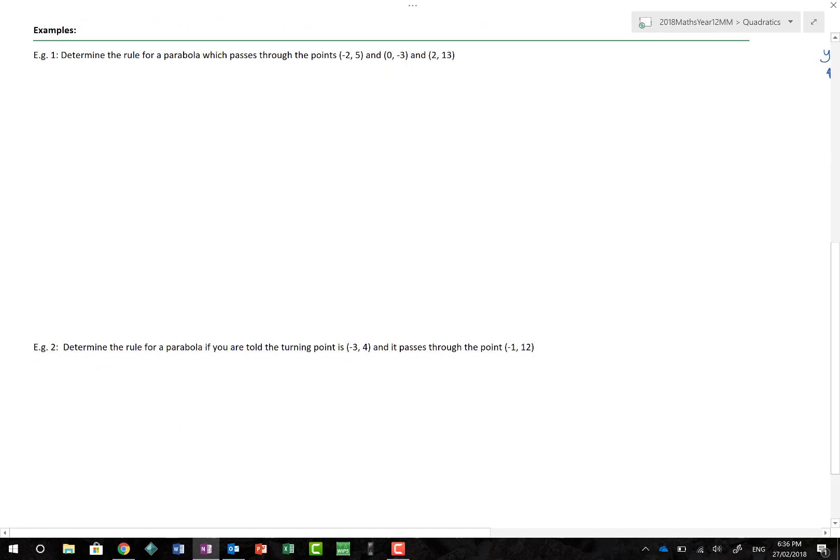It's going to be a really short video because we're straight on to those examples. So determine the rule for a parabola which passes through the points (-2, 5), (0, -3), and (2, 13). So we've been given three points, and we know that we've got the formula y = ax² + bx + c. Now, any coordinate is nothing more than an x and a y value. And that's exactly what I'm going to do here. So we know that for the first coordinate, we've got (-2, 5). We know that 5 = a(-2)² + b(-2) + c, which gives us 5 = 4a - 2b + c. Well, there's equation number 1.